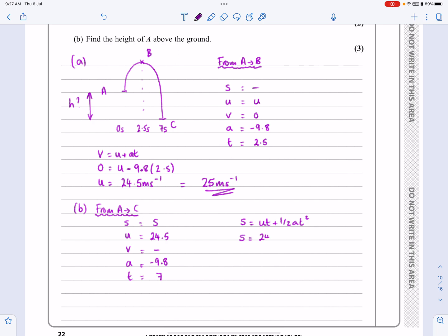Put in what we know. So I've got 24.5 times 7. I've got plus a half minus 9.8, 7 squared. And it's just a matter of working all of that out then. So if you put that all into the calculator, that works out to be minus 68.6, or rather minus 69. And so we can say the height above the ground is 69 meters.